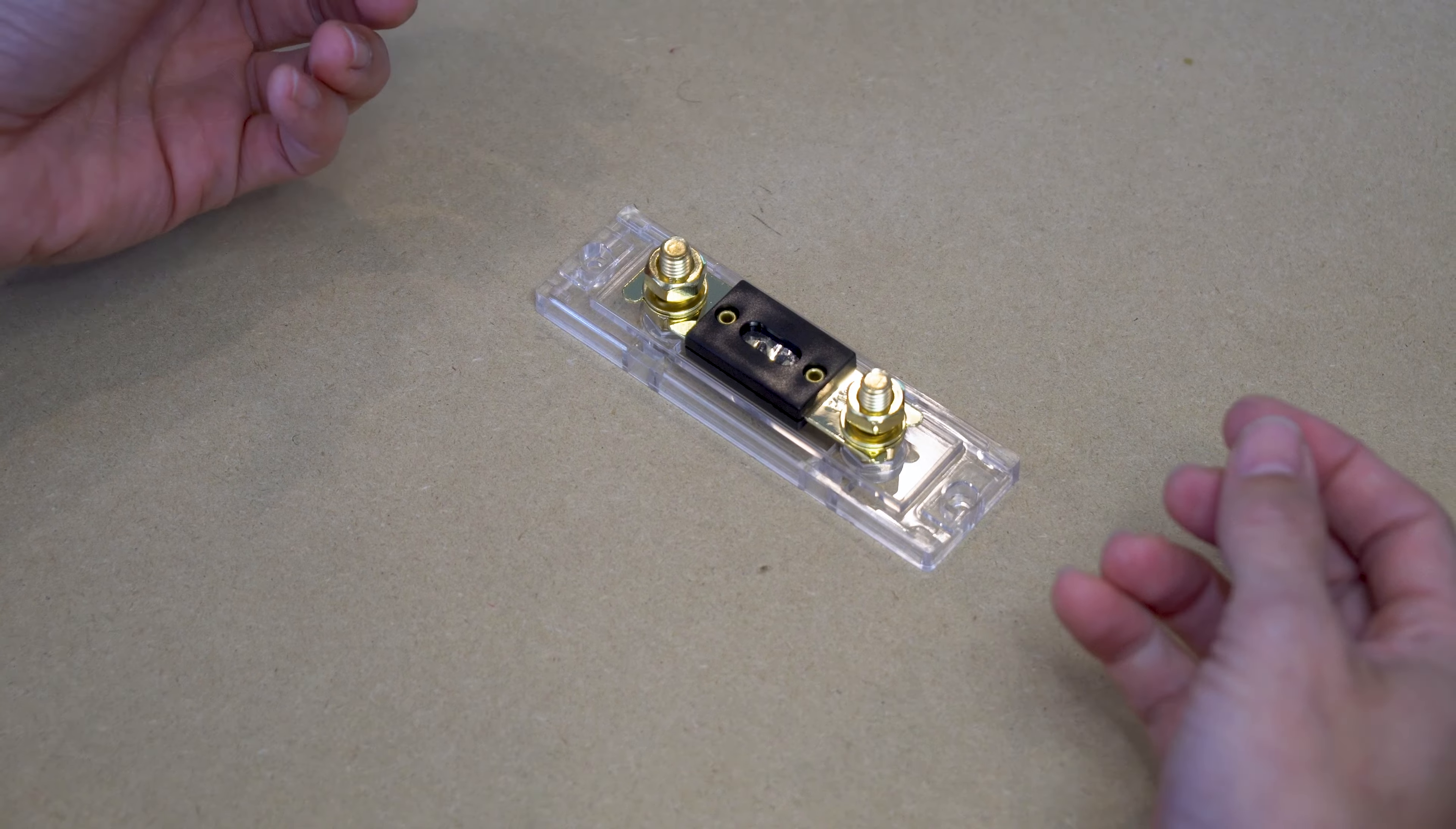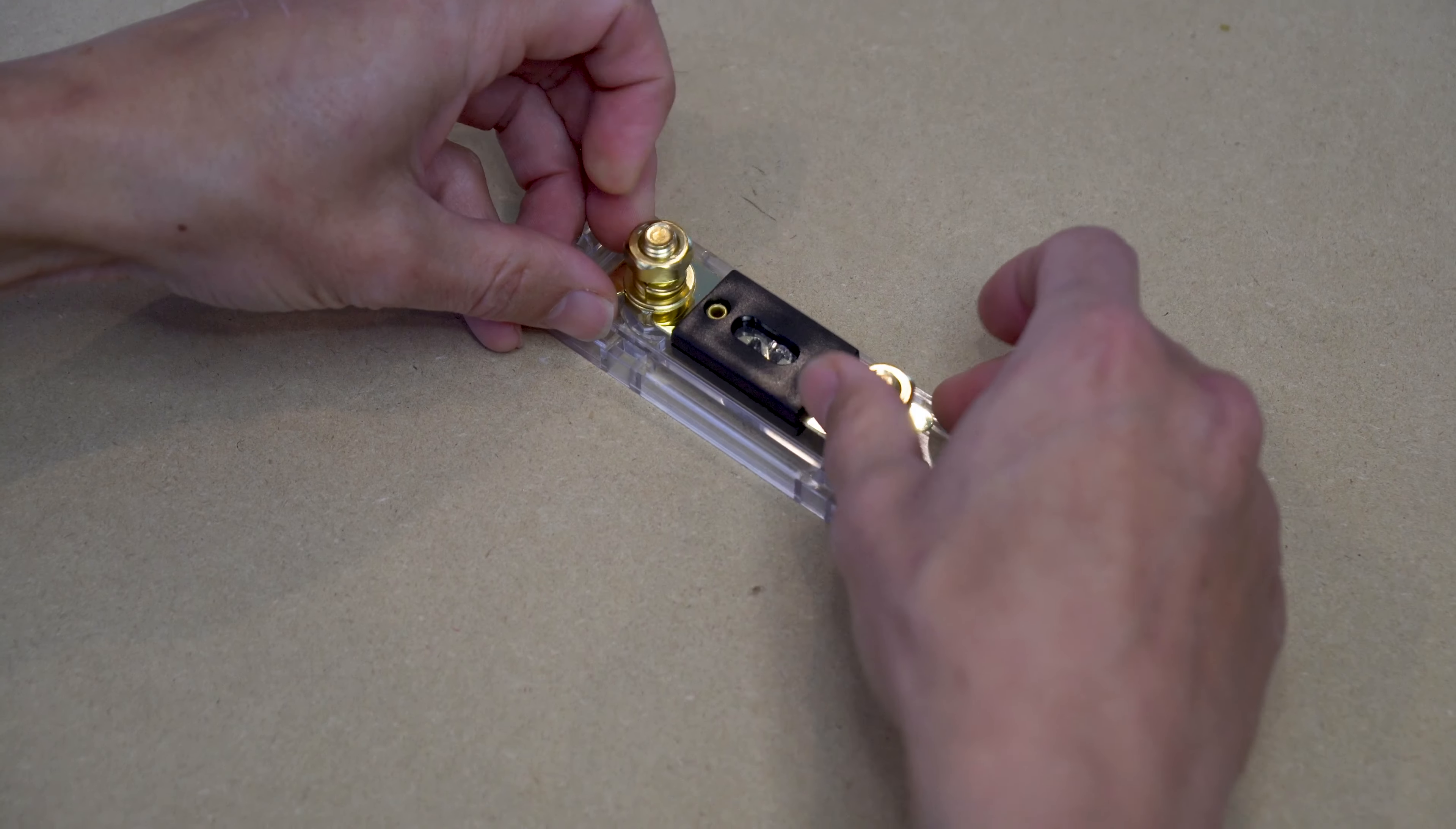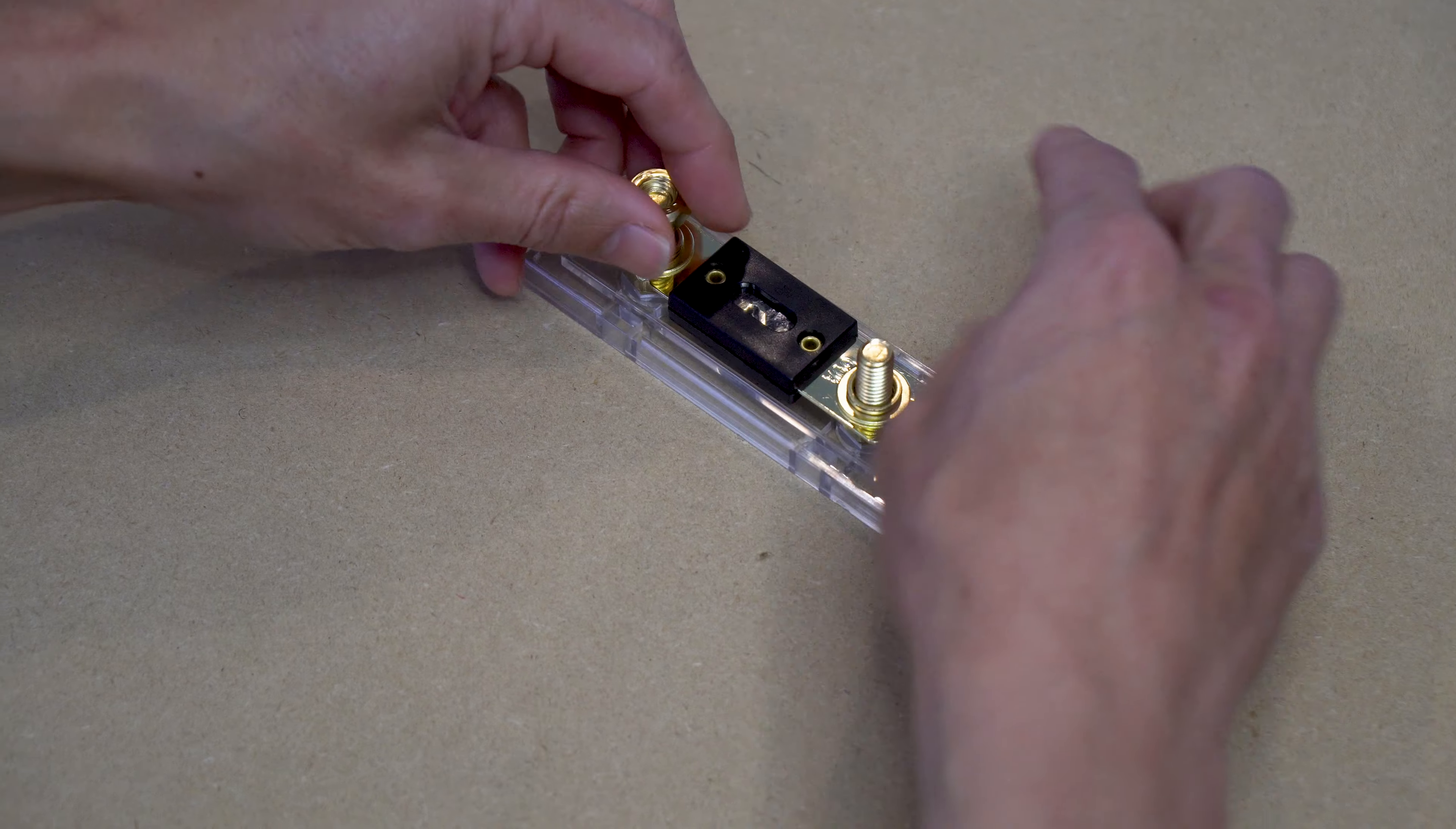To connect this fuse to the wire you'll need to remove the hex nuts, fuse, and washers. So that's what we're going to do here.